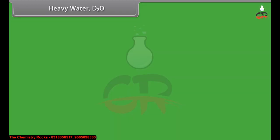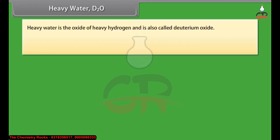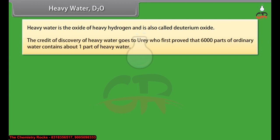Heavy water: heavy water is the oxide of heavy hydrogen and is also called deuterium oxide. The credit of discovery of heavy water goes to Urey, who first proved that 6000 parts of ordinary water contains about one part of heavy water.